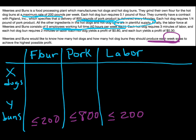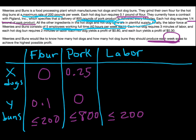For hot dogs, it doesn't say anything about flour, so we'll assume there's no flour in a hot dog. Likewise, there would be no pork in a hot dog bun. We do see that hot dog buns require 0.1 pounds of flour. Hot dogs require a quarter pound of pork product. Hot dogs require 3 minutes of labor, and hot dog buns require 2 minutes of labor. And that's everything in the chart.